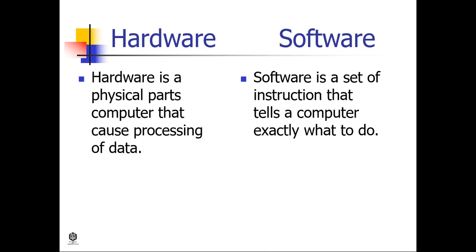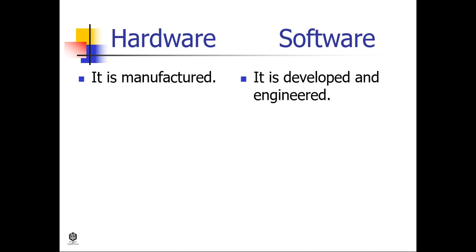Hardware is the physical part of a computer that handles the processing of data, while software is a set of instructions that tells a computer exactly what to do. Hardware is manufactured, while software is developed and engineered.